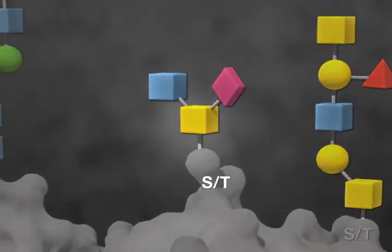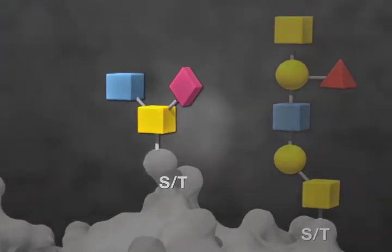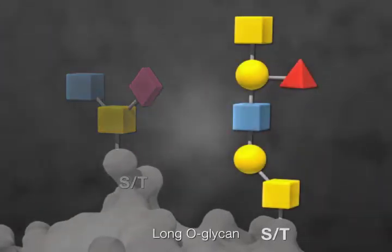O-glycans are often short chains consisting of only a few sugars, or they can be extended by the addition of different monosaccharides, resulting in a longer chain.